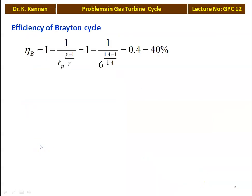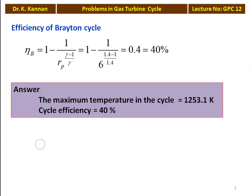We calculate the efficiency of the Brayton cycle: η_B = 1 - 1/Rp^((γ-1)/γ) = 1 - 1/6^(0.4/1.4) = 0.4, which is 40%. The answer: maximum temperature = 1253.1 K and cycle efficiency = 40%.